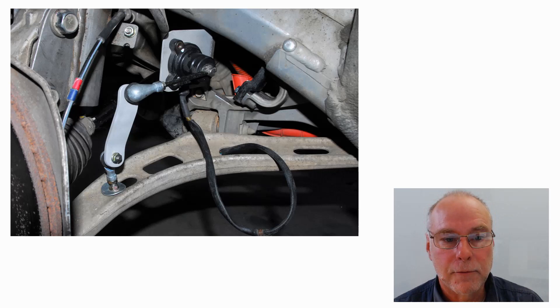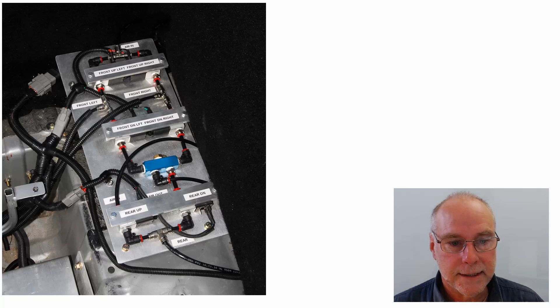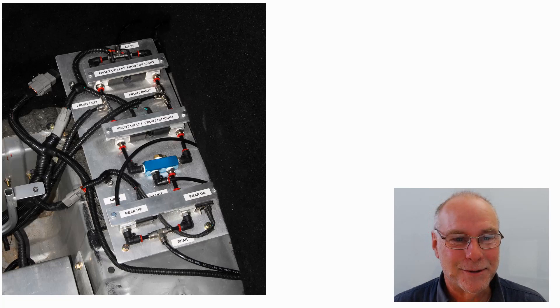Here is my solenoid block, as such. I built it up from individual solenoids - eBay solenoids - and then push-fit fittings. And then I added lots of labels, because if you don't have lots of labels, it's really easy to get confused. So you can see there are up and down solenoids for the rear, controlled as a pair, and then there are individual up and down solenoids for each side on the front.